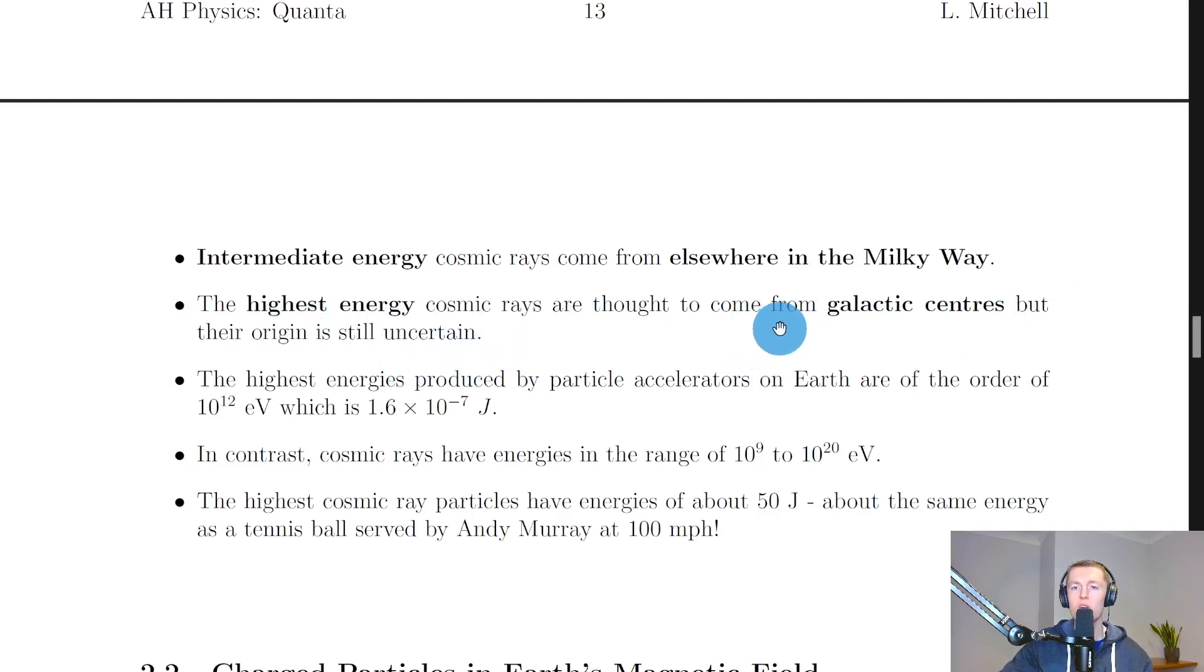So that just means the cores of galaxies, the centers of galaxies. We say the highest energies produced by particle accelerators on Earth are of the order of 10 to the 12 electron volts, which is 1.6 times 10 to the minus 7 joules. But in contrast, cosmic rays have energies in the range of 10 to the 9 to